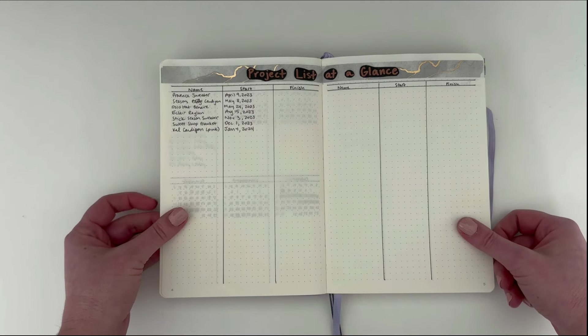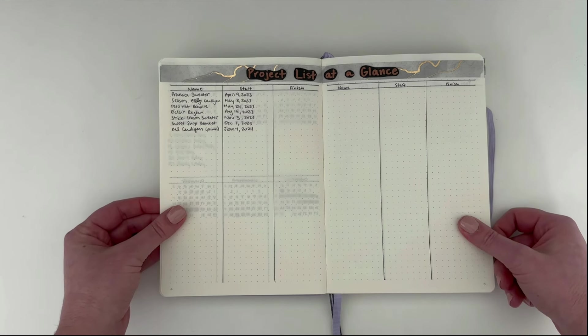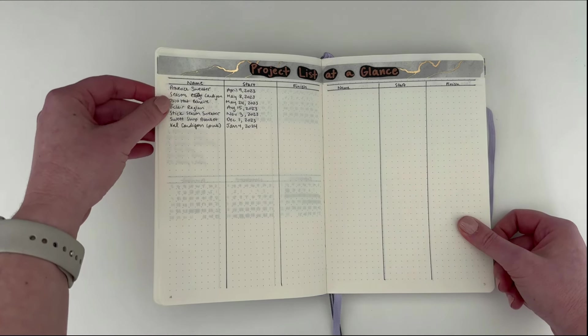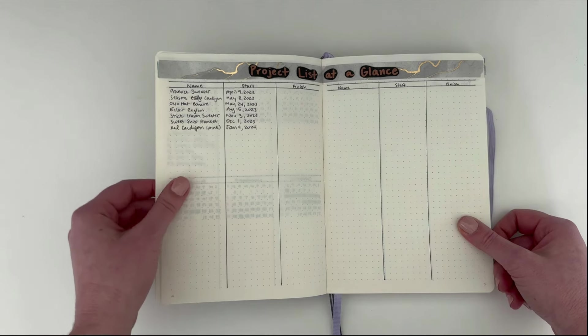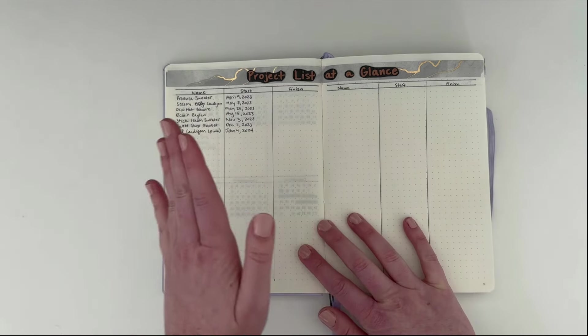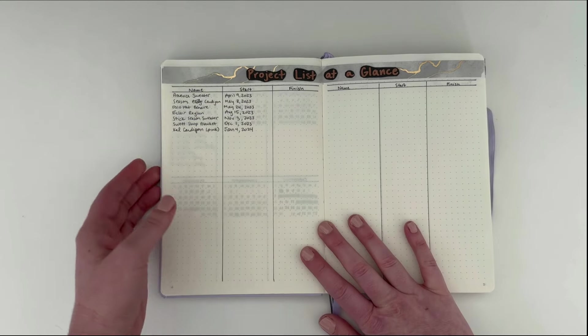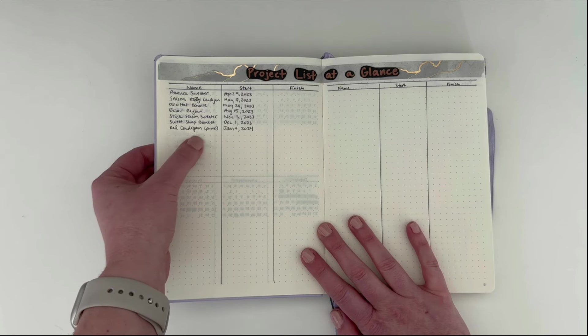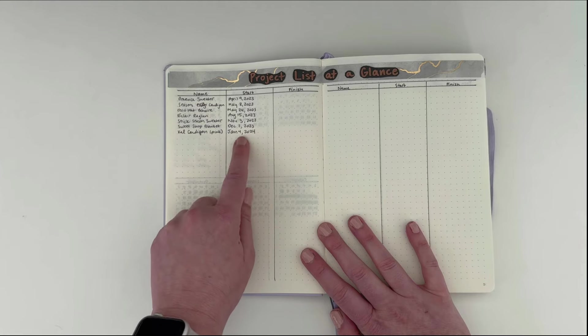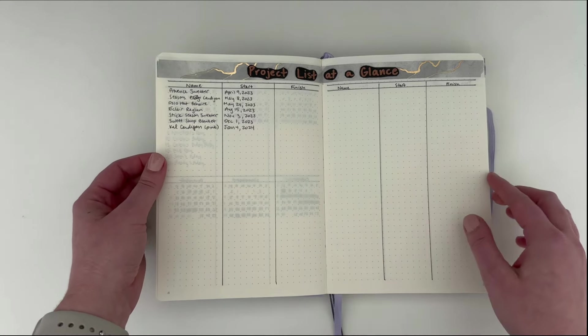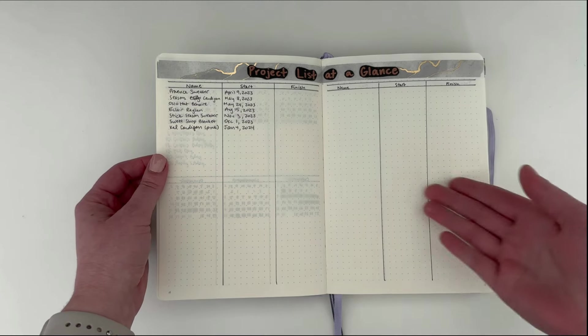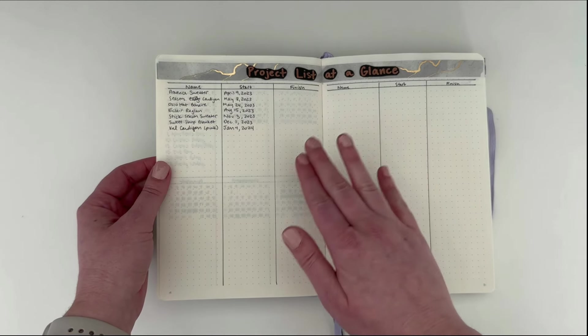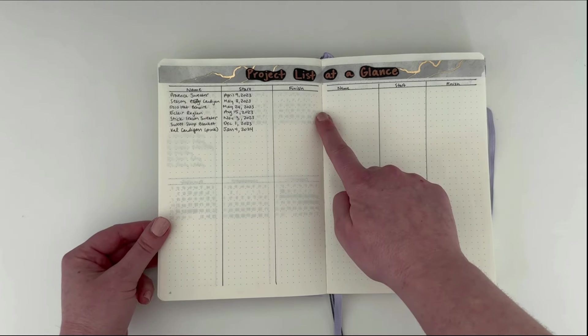Then we come into my knitting specific pages. The first one is project list at a glance. I carried over all of my WIPs that I'm bringing into 2024. I've got the name of each pattern, the start date, and I will include the date that I finish it. I have already cast on one new item in 2024, the cow cardigan on January 4th, so I was able to add that onto my list. This is a really nice page just to see all of your projects, everything that you started in a year. If you don't finish it, obviously this finish line will be blank.